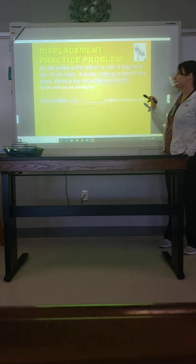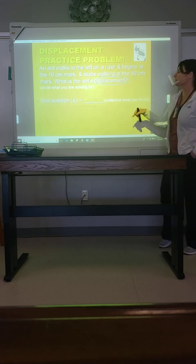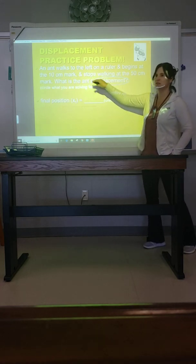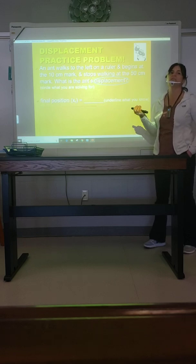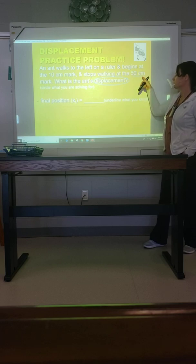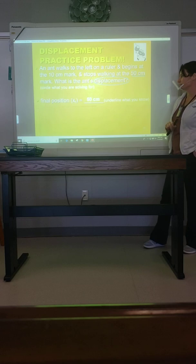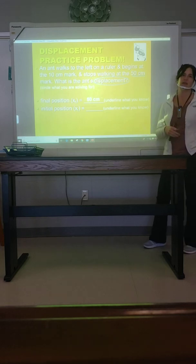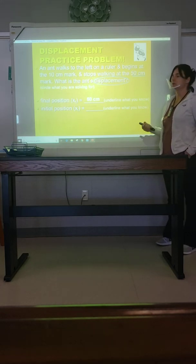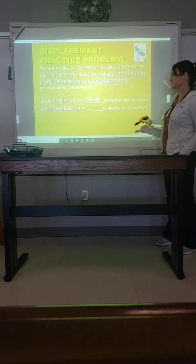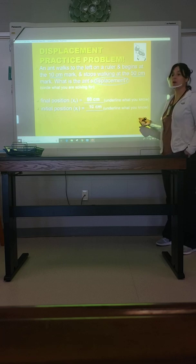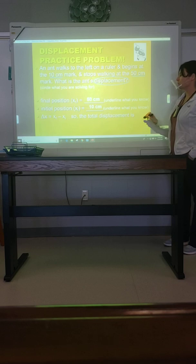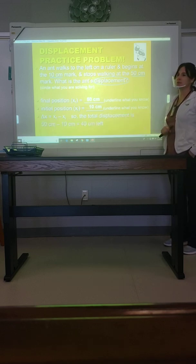Now we underline the things we know. Words like 'stops' or 'ends' are key words for final position, so we underline 50 centimeters — that's the ant's final position. Words like 'begins' or 'starts' key us in to the initial position, so we underline 10 centimeters. Now we have everything we need. Using Δx = xf − xi: 50 centimeters minus 10 centimeters gives us an answer of 40 centimeters.